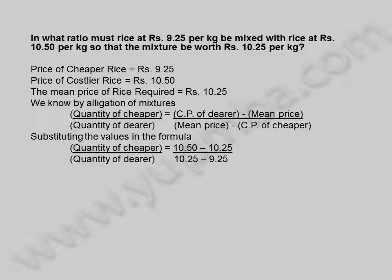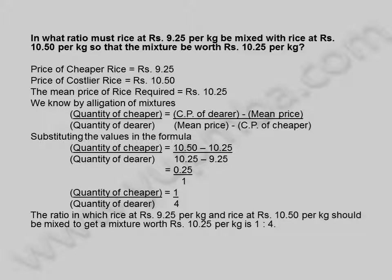quantity of cheaper by quantity of dearer is equal to 10.50 minus 10.25 by 10.25 minus 9.25, is equal to 0.25 by 1, is equal to 1 by 4. The ratio in which rice at ₹9.25 per kilogram and rice at ₹10.50 per kilogram should be mixed to get a mixture worth ₹10.25 per kilogram is 1 is to 4.